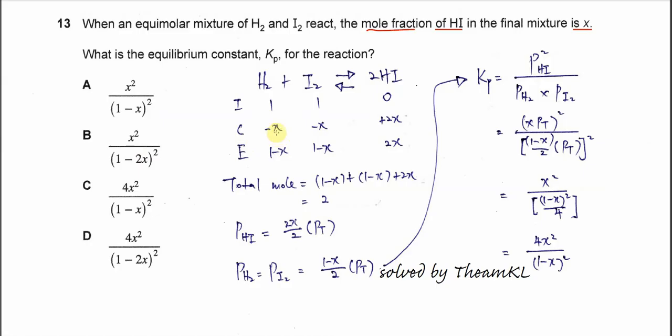Minus X for this H2 and I2. If the H2 and I2 minus X, so the HI must plus 2X because it's 1 to 2 mole ratio. After that sum up the I and C, you'll get the mole at equilibrium. So it's 1 minus X for this H2 and I2 and the HI is 2X.